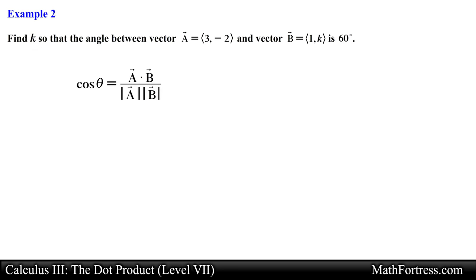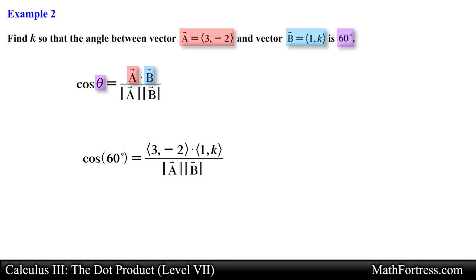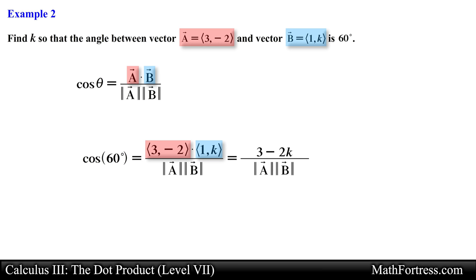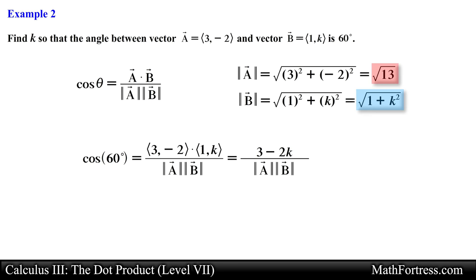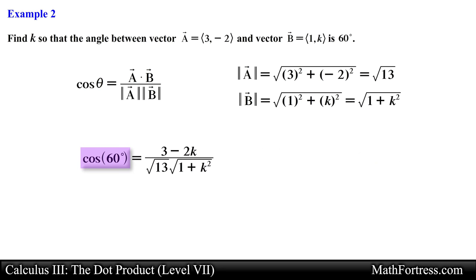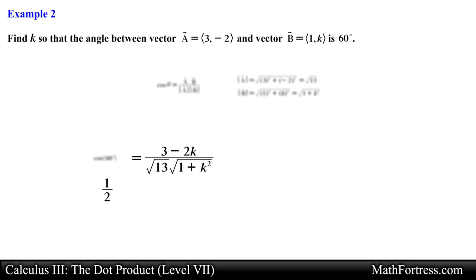Let's start by using the geometric definition of the dot product and substitute the known expressions. The angle between the vectors is 60 degrees, and the dot product between vector a and vector b reduces to the following expression. We compute the magnitudes of vector a and vector b and substitute these expressions into the geometric definition of the dot product. Next we evaluate cosine of 60 degrees, which equals one half.